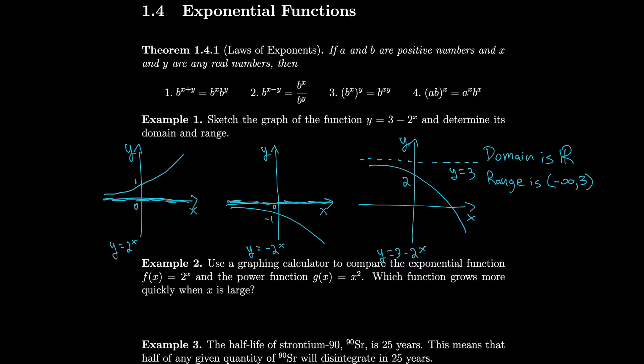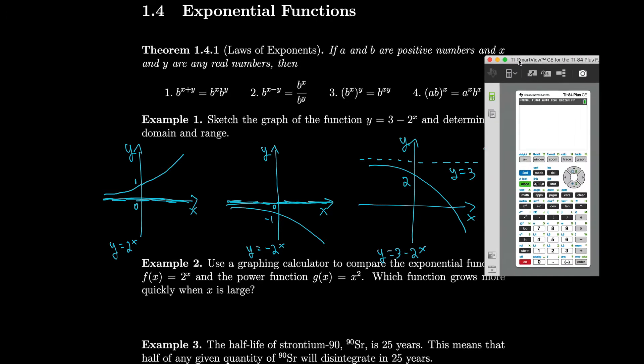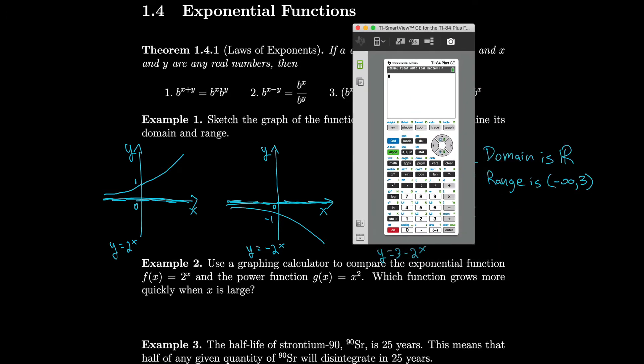Example 2. Let's use a graphing calculator to compare the exponential function f of x equals 2 to the x and the power function g of x equals x squared. And let's see which function grows more quickly when x is large. So let's pull out our handy dandy calculator emulator. Go to y equals. We'll put in 2 to the x. Enter and x squared. So 2 to the x will be blue and x squared will be red. Hit graph.